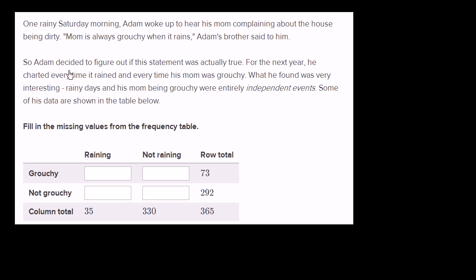So Adam decided to figure out if the statement was actually true. For the next year, he charted every time it rained and every time his mom was grouchy. What he found was very interesting. Rainy days and his mom being grouchy were entirely independent events. Some of his data are shown in the table below.